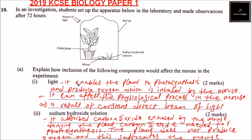So that is the effect of sodium hydroxide solution. By answering that, you'll be able to get two marks for part A, roman number one, and two marks for part A, roman number two. Let's go to part B.